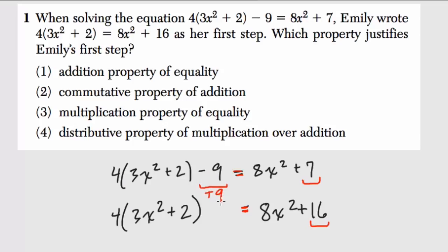Negative 9 plus 9, that would give us the 0 here. You can think of this empty spot as having nothing, nothing plus nothing, 0. And 7 plus 9 is also 16. So that just means that we now know they added 9 to both sides. When you add to both sides of an equation, that's called the addition property of equality.